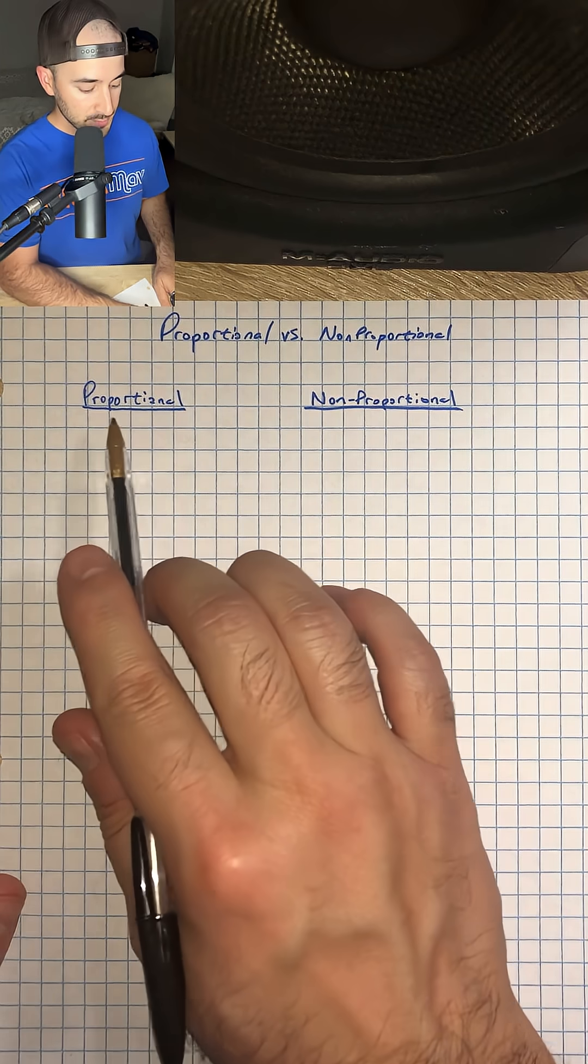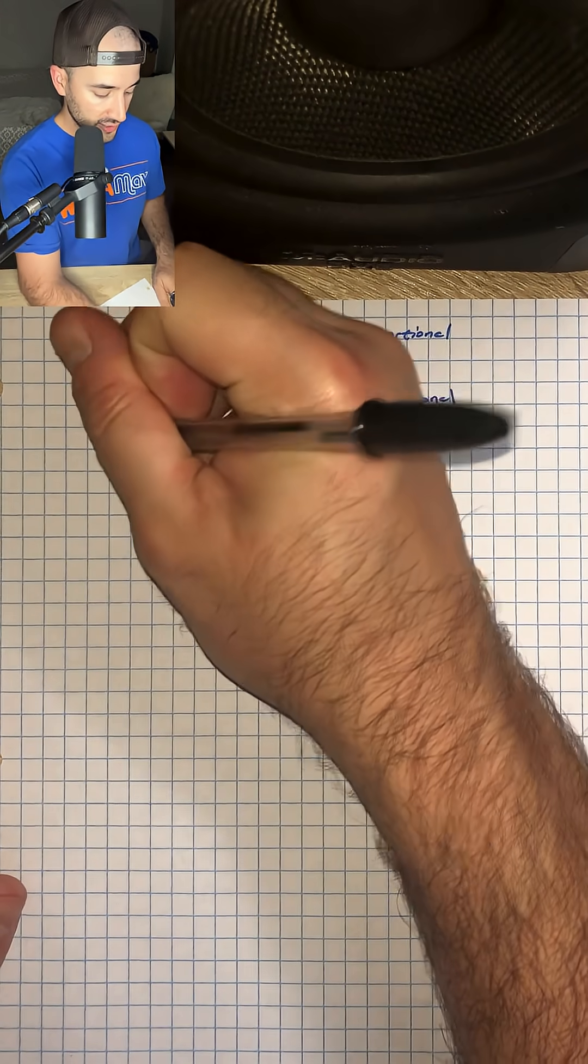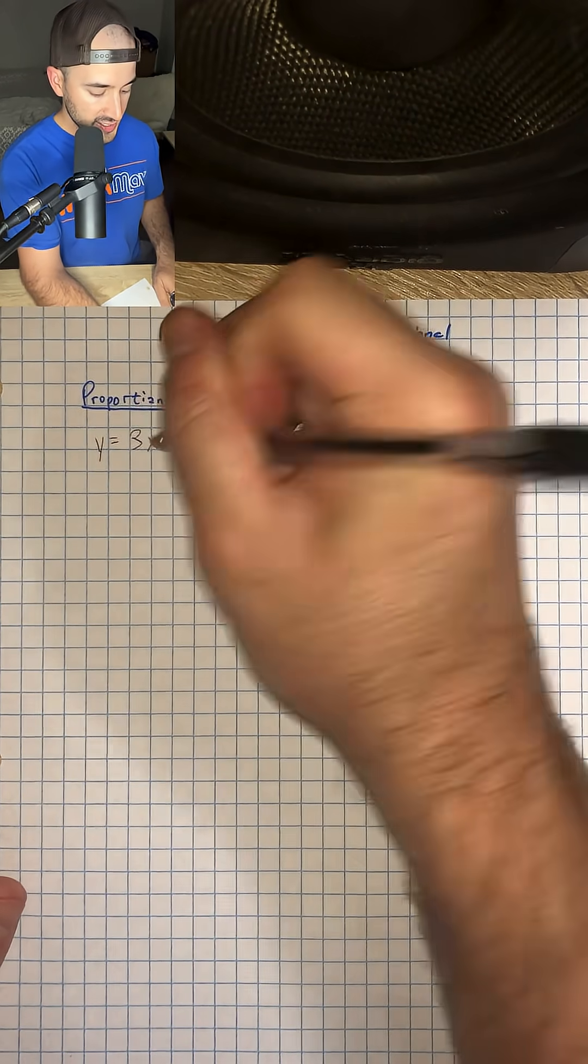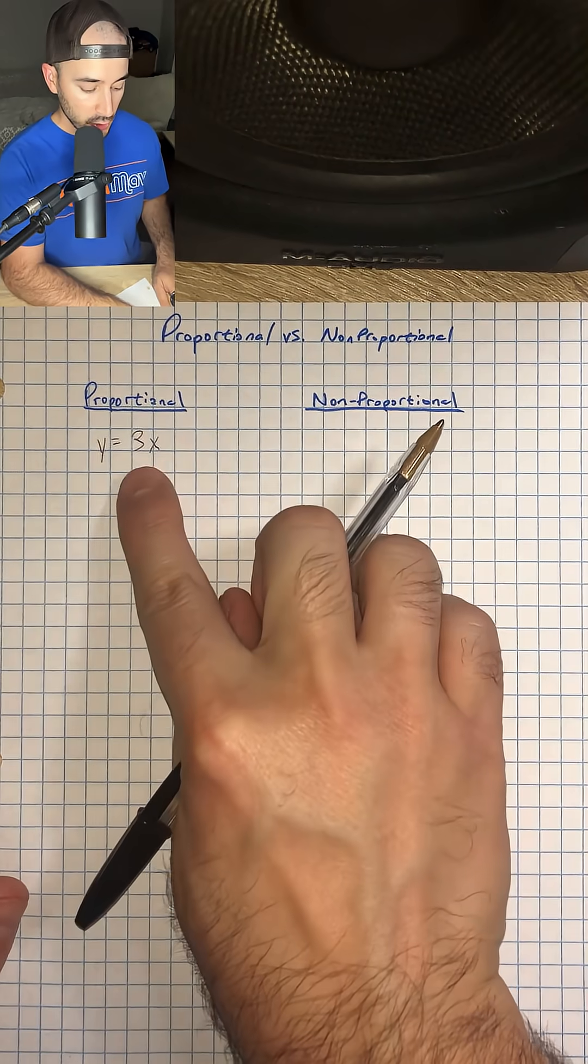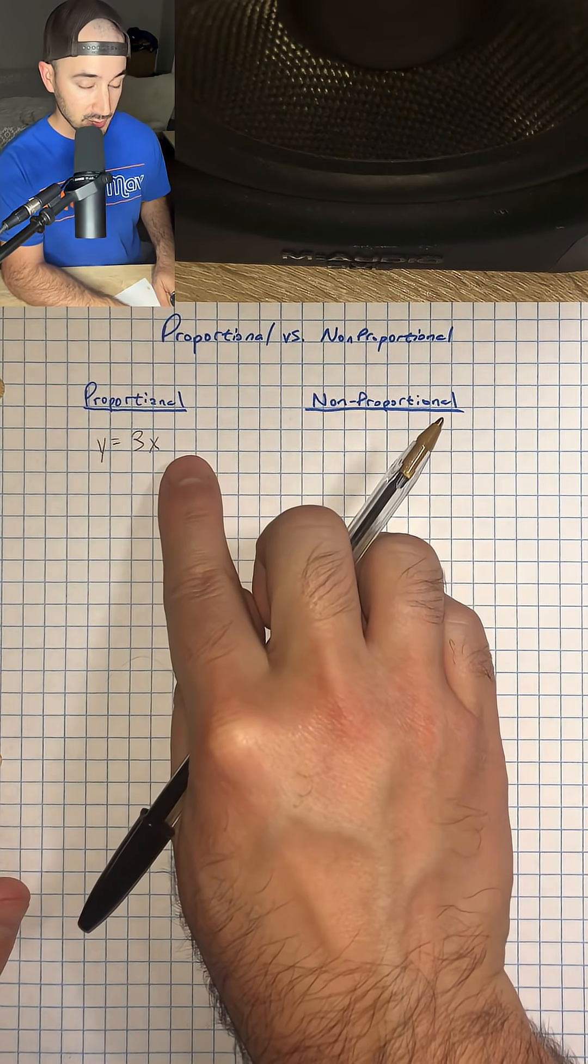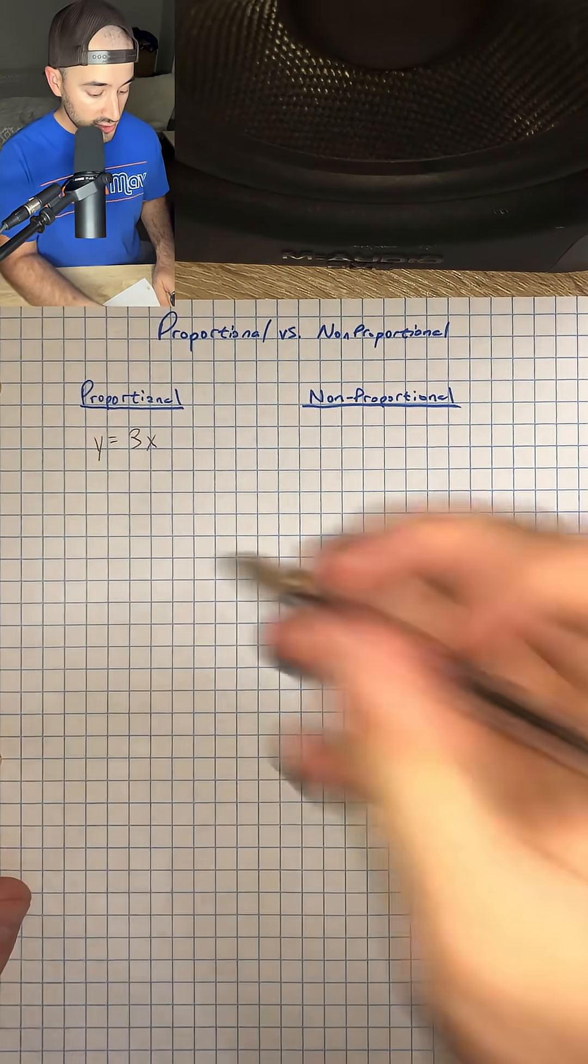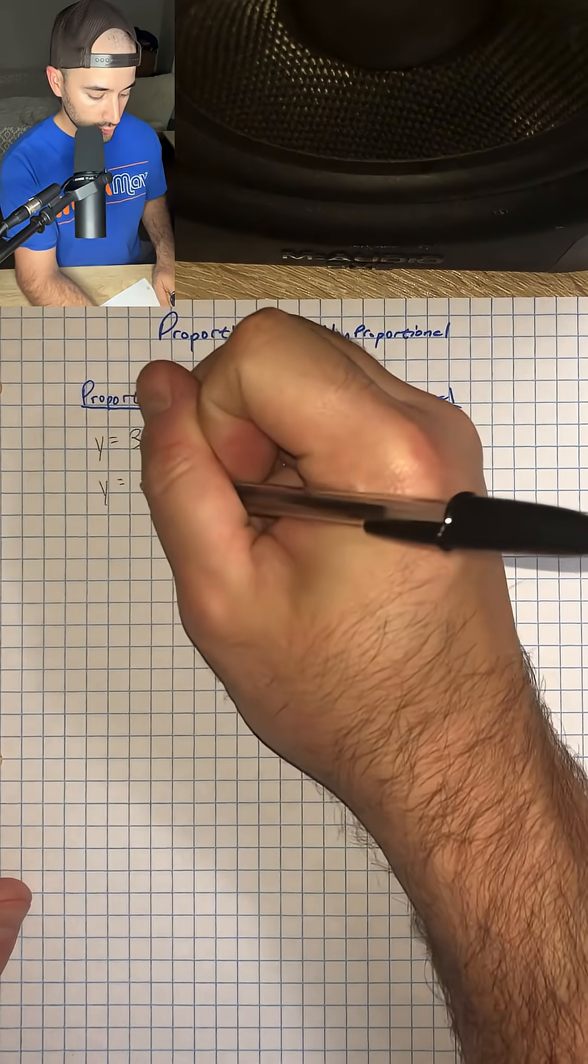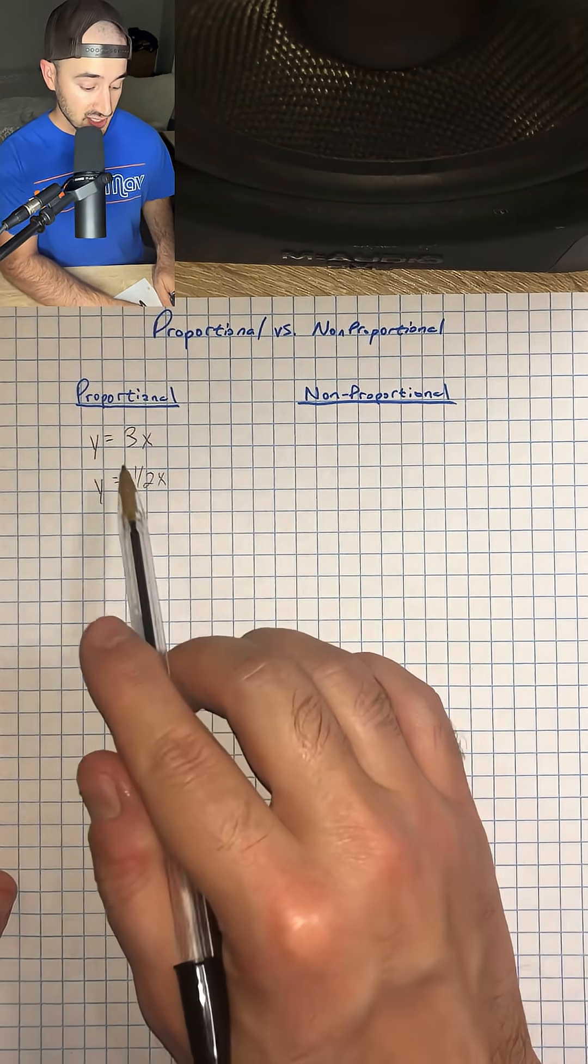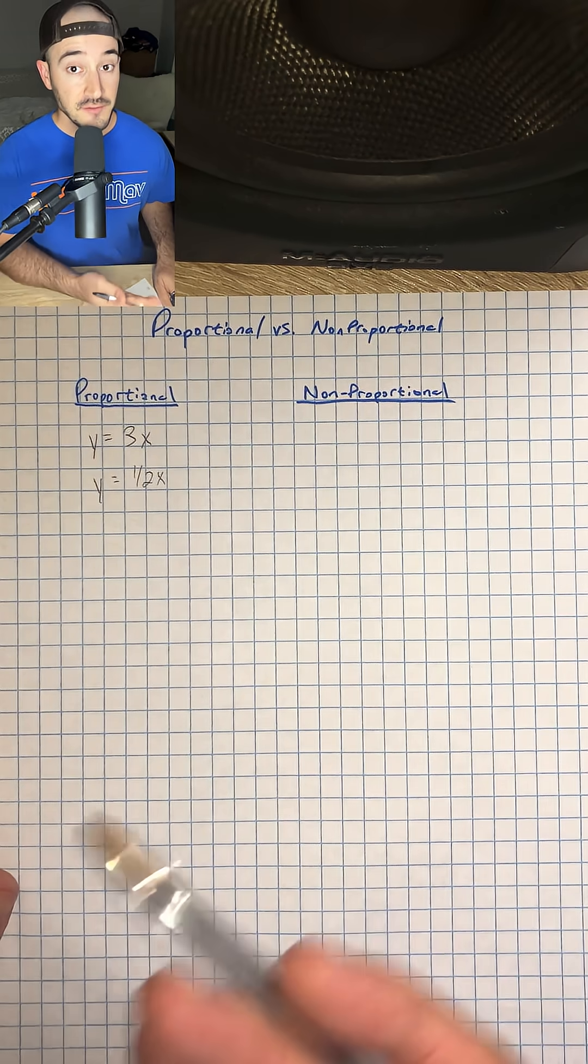If it's proportional, we're going to see some kind of equation that looks like y equals 3x. Notice we don't have any plus or minus after this because there's not going to be any y-intercept, it's just going to be zero. We could also have y equals one half x. The main thing is that we have x and some number in front of it, even if it's one, and then we don't have any plus or minus after that.